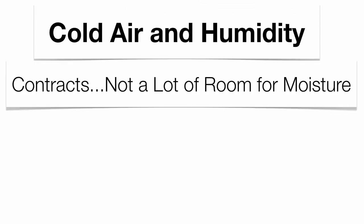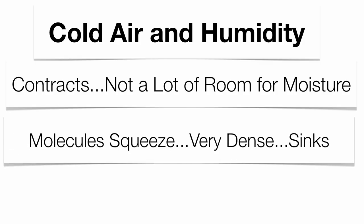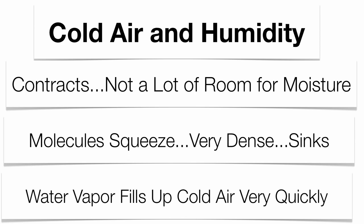Cold air doesn't hold a lot of moisture because cold air contracts. Those molecules get squeezed close together — very tightly and densely packed — which means that air is going to sink. Dry air is usually associated with colder temperatures because there's just not a lot of room for water vapor to work its way in. And the water vapor that does get into cold air fills it up extremely quickly.